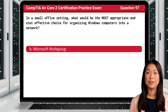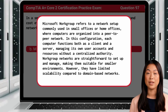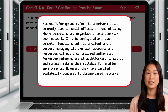The answer is B: Microsoft Workgroup. Microsoft Workgroup refers to a network setup commonly used in small offices or home offices, where computers are organized into a peer-to-peer network. In this configuration, each computer functions both as a client and a server, managing its own user accounts and resources without a centralized authority. Workgroup networks are straightforward to set up and manage, making them suitable for smaller environments. However, they have limited scalability compared to domain-based networks.